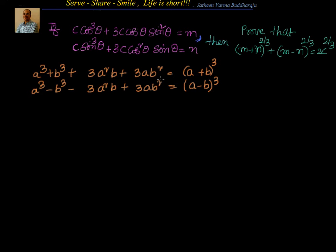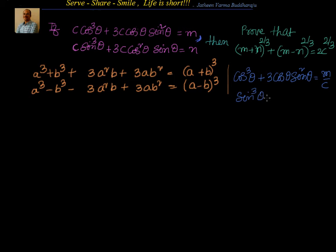If you observe the values of m and n, you will see that if you add m and n, you are getting all the terms of (a+b)³ where a = cosθ and b = sinθ. So if I take c out, I will have: cos³θ + 3cosθ sin²θ = m/c — call this equation 1. Similarly, sin³θ + 3cos²θ sinθ = n/c — call this equation 2.